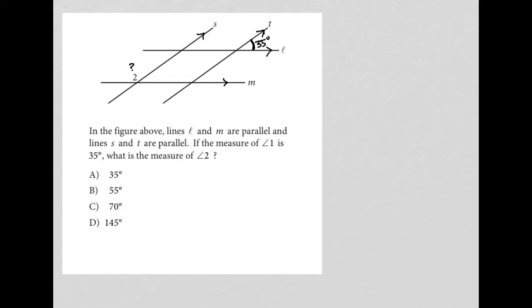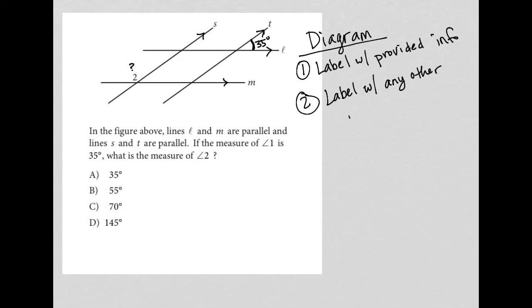So this is a diagram question. This is a really great diagram question because it really follows the strategy that I teach, which is with a diagram, you want to, first of all, label with provided information, which we did. We replaced angle 1 with 35 degrees, we placed the question mark at angle 2, so provided info. And number 2, which is, I shouldn't say more important, but usually the step that's going to get you to the answer.